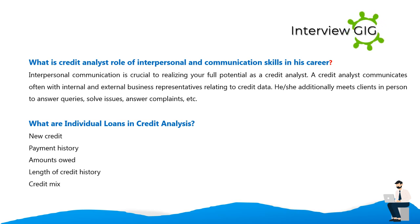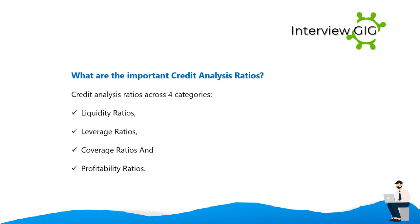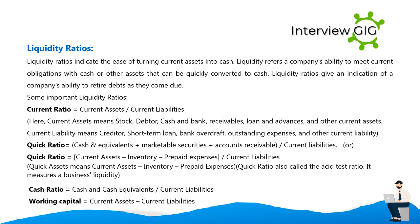What are individual loans and credit analysis factors? New credit, payment history, amount owed, length of credit history, and credit mix. What are the important credit analysis ratios? Credit analysis ratios fall across four categories: liquidity ratios, leverage ratios, coverage ratios, and profitability ratios. Liquidity ratios indicate the ease of turning current assets into cash and reflect a company's ability to meet current obligations, giving an indication of the ability to retire debts as they come due.